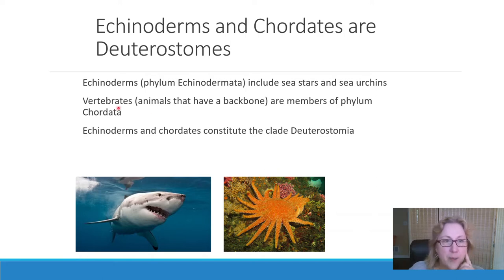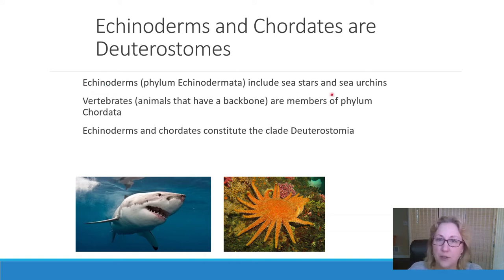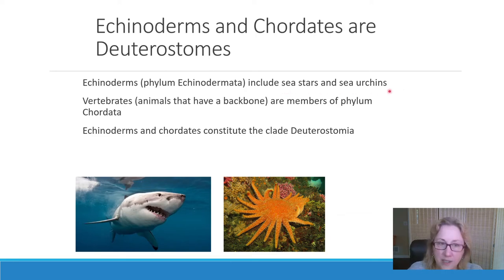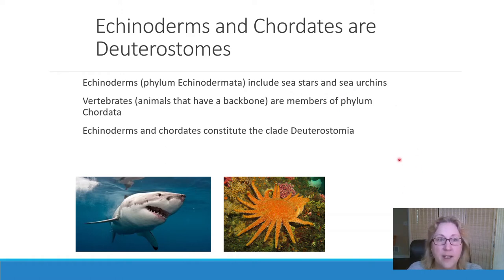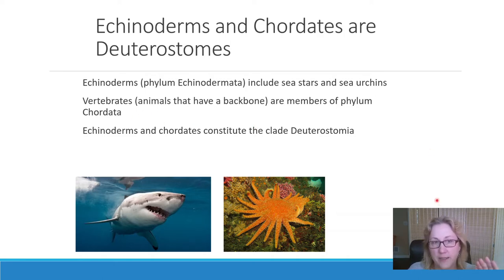We'll spend the most time talking about the echinoderms. The name echinoderm means spiny skin — echino is spiny, derm is skin. So echinoderms are the spiny-skinned animals, which includes sea stars and sea urchins, especially sea urchins which are generally very spiny. Within the chordates, we have the vertebrates, and we have a whole chapter for them because we like to spend the most time talking about our own phylum.